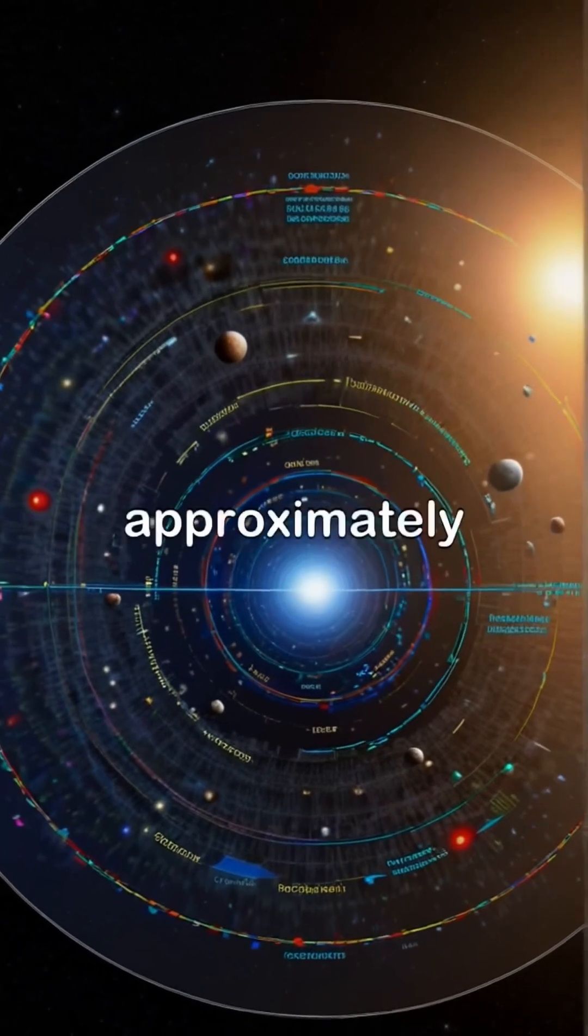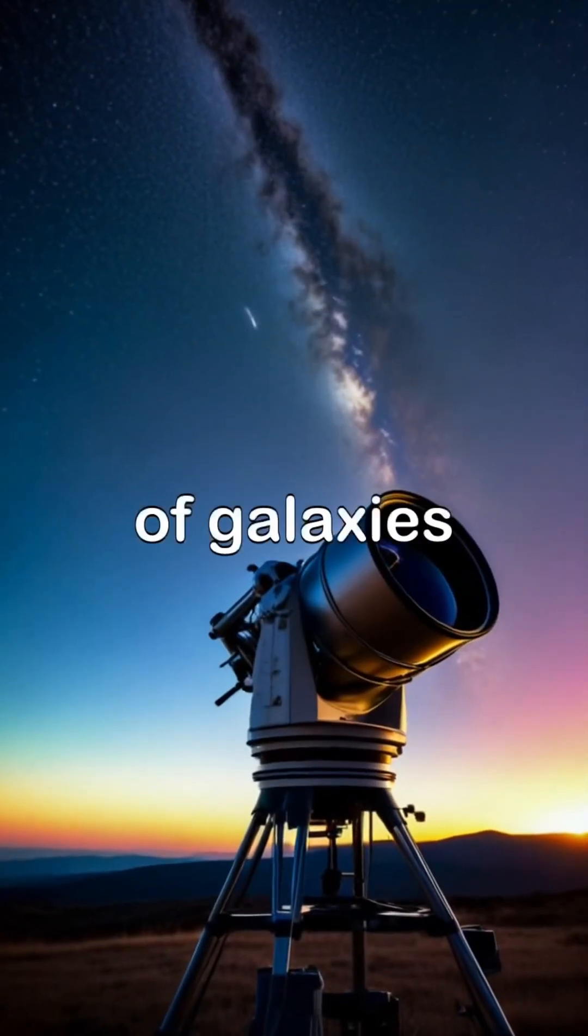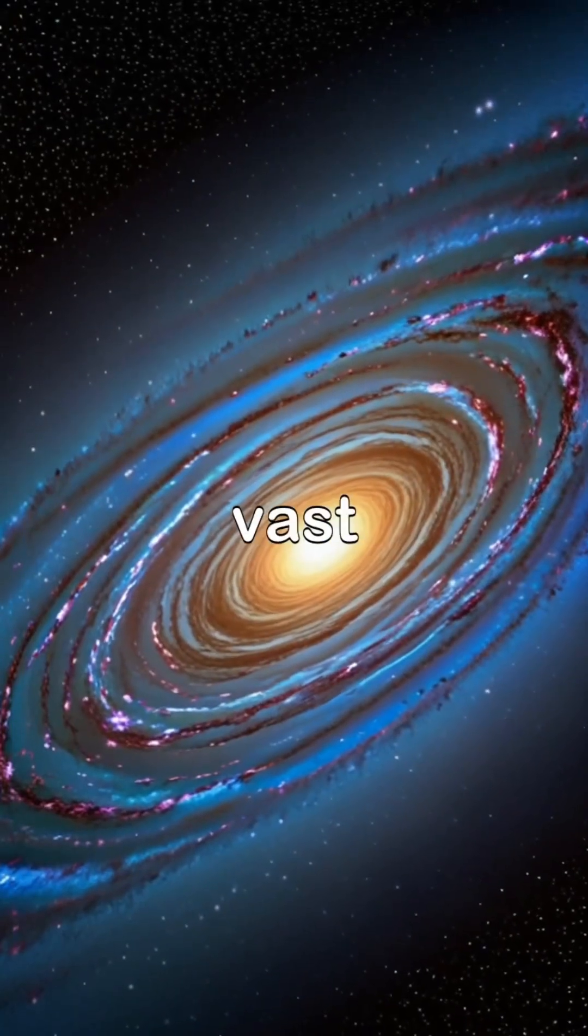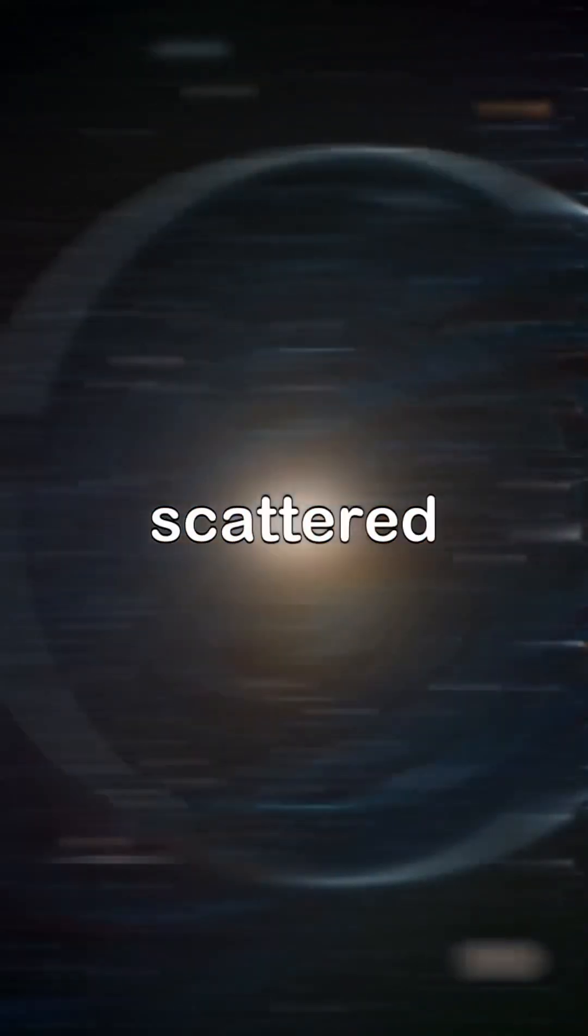The observable universe stretches approximately 93 billion light-years in diameter, containing billions of galaxies. Within this vast expanse, our Milky Way is just one of over two trillion galaxies scattered throughout the universe.